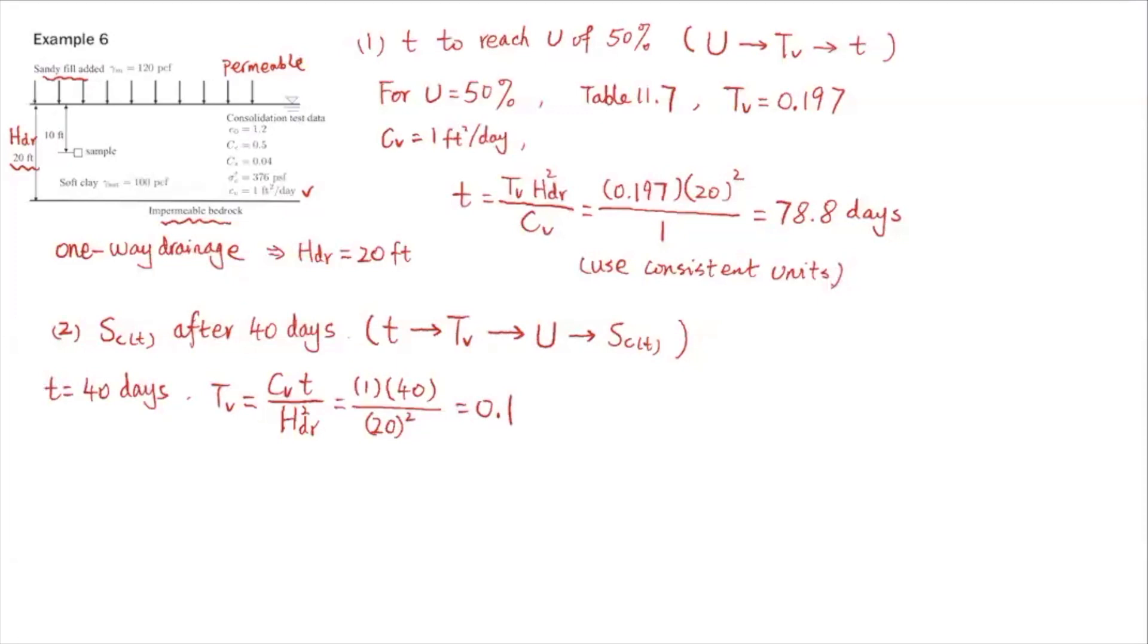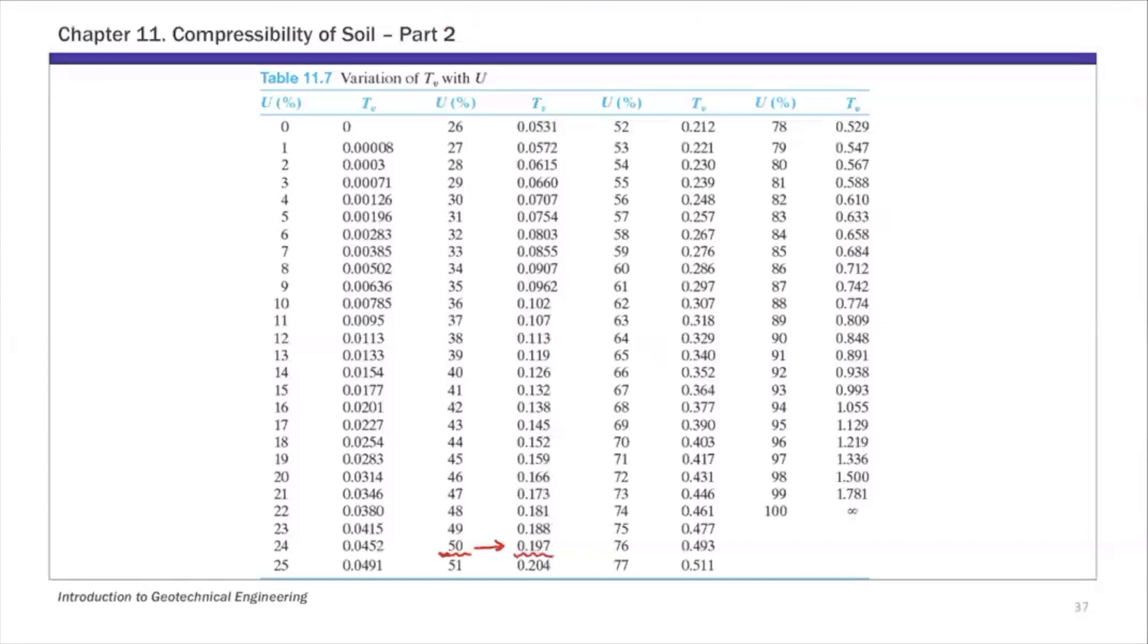Once you have time factor, again, Table 11.7. Let's look at that table. This time we start from Tv. We know Tv is 0.1. It's 0.102 in this table. That's fairly close to 0.1, so we're going to take this value. If you want to be really accurate, you can do a linear interpolation between these two values, but you're going to get very close to U. So U is 36%. The value is going to be very close to 36%.